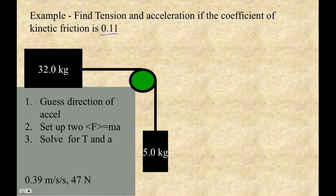The first step here is to guess the direction of the acceleration. I'm going to guess, and I do believe I'm correct, that this is going to accelerate this way, and that this guy is going to accelerate this way. That's my direction of the acceleration, and that will determine the positive direction. Positive will be that way, and for this guy, positive will be down.